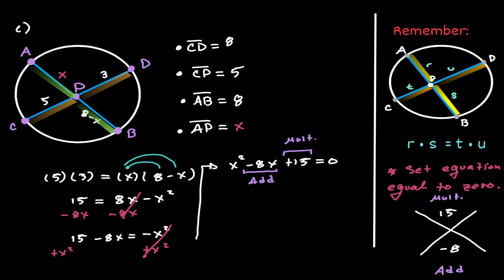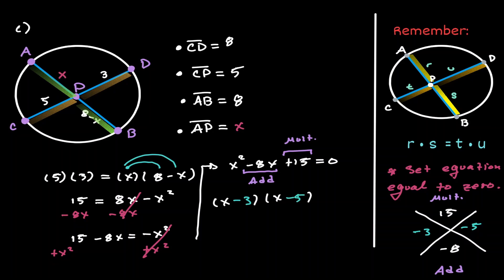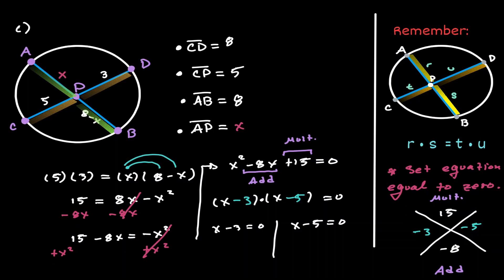Those two numbers are negative 3 and negative 5. Notice that when we multiply them, we get positive 15, and when we add them, we get negative 8. Now let's write the quadratic in factored form: (x minus 3)(x minus 5) equals 0. When two expressions multiply to equal zero, we can set each factor equal to 0. Our first expression gives x minus 3 equals 0, so x equals 3. Our second expression gives x minus 5 equals 0, so x equals 5.